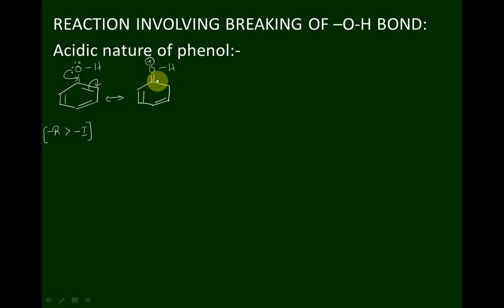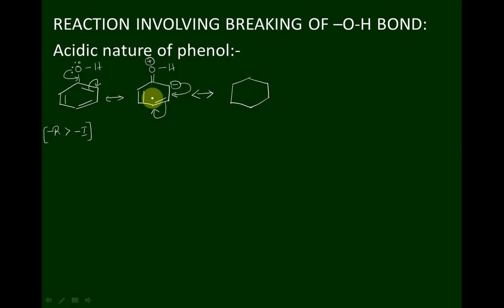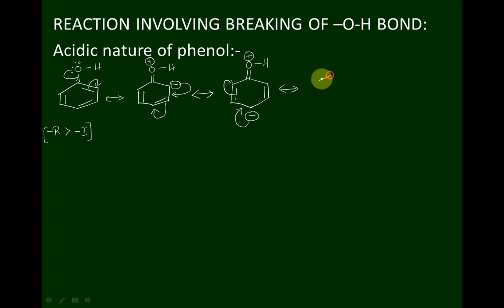Because benzene is a conjugated system, by donating the electron density the oxygen carries a positive charge, and by accepting the electron density the sp² carbon atom of benzene carries a negative charge. This negative charge is delocalized throughout the benzene ring — delocalization means the movement of electron density in the conjugated system from one atom to another; it is not static but in motion.